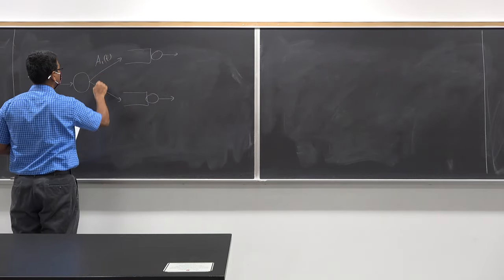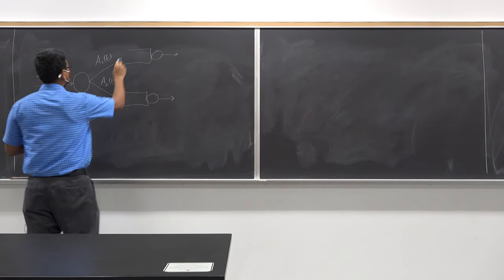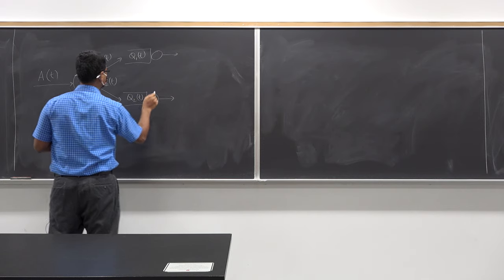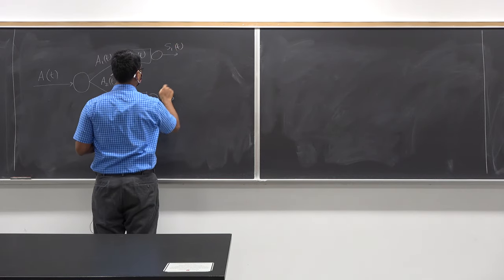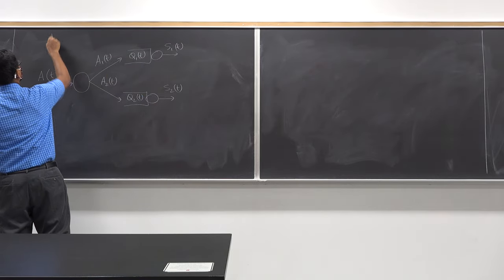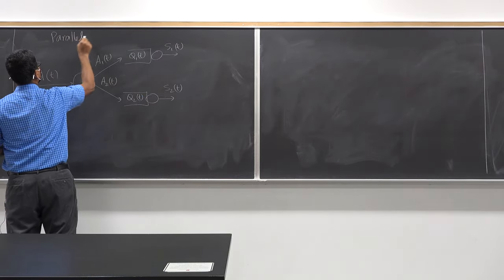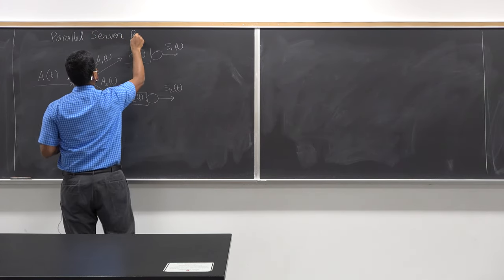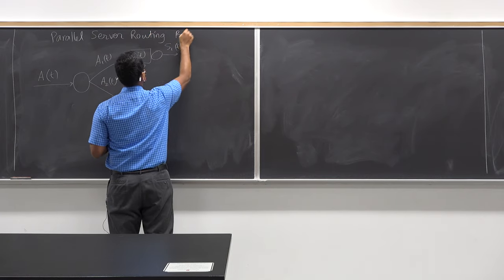Let me draw the diagram. We have a1(t), a2(t), q1(t), q2(t), s1(t), and s2(t). This is the server routing — a parallel server routing problem.